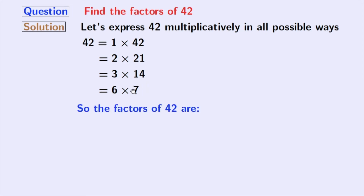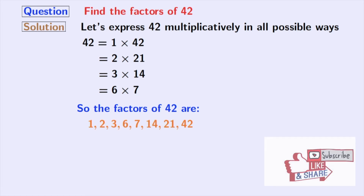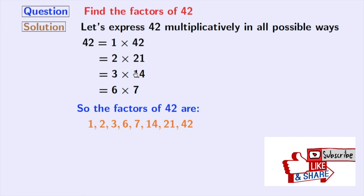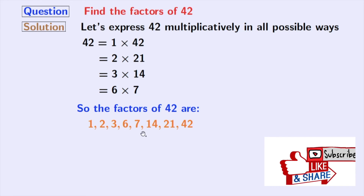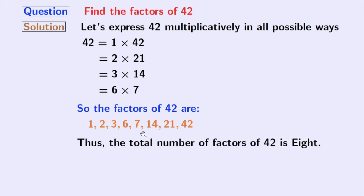So here are the factors of 42, which are 1, 2, 3, 6, 7, 14, 21, and 42. So the total number of factors of 42 is 8.